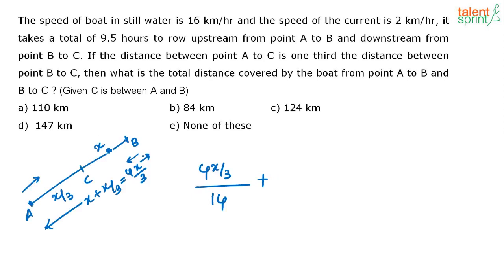Now to come from B to C, the boat is travelling downstream. The distance it has to travel is X kilometers, and the speed downstream is 18 kilometers per hour. It is given that the total time taken is 9.5 hours, so from this you have to find out the value of X.